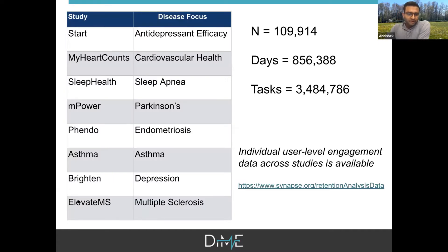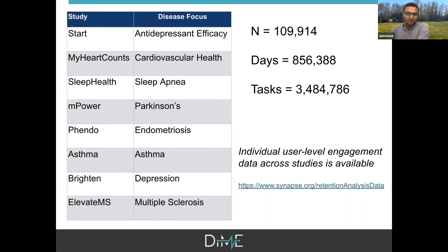Briefly on sample size: about 100,000 study participants, close to 900,000 person-days, and about 3.5 million tasks. I want to put a double asterisk here — this is not exhaustive and the learnings are broad but limited to eight studies. However, it's incredibly hard to find user-level engagement data from studies. We've released the data freely to qualified researchers worldwide, which is why publication was delayed more than six months. The data follows FAIR principles — computable, accessible, and well-provenanced.